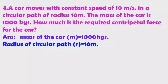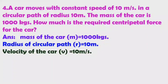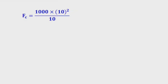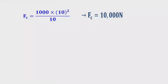Velocity of the car v = 10 meters per second. The required centripetal force is given by the formula Fc = mv²/r. Substituting the values: Fc = 1000 × 10² / 10. We can cancel 10 from 1000 and 10, giving centripetal force = 10,000 Newtons, or 10⁴ Newtons.